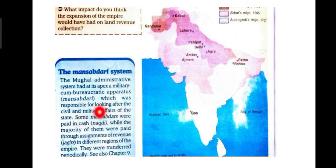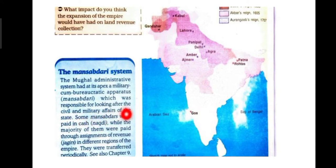Some Mansabdars were paid in cash — Nakdi. However, the majority of them were paid through the assignment of revenues called Jagirs. Some received cash as Mansabdars while others received Jagirs — land or revenue from land in different regions of the empire. They were also transferred periodically.